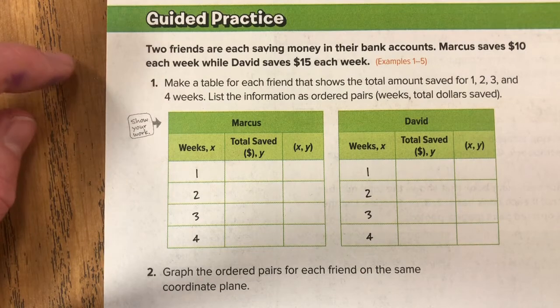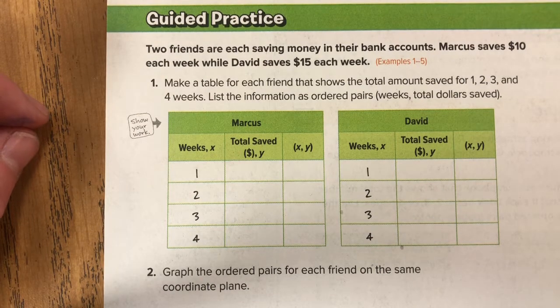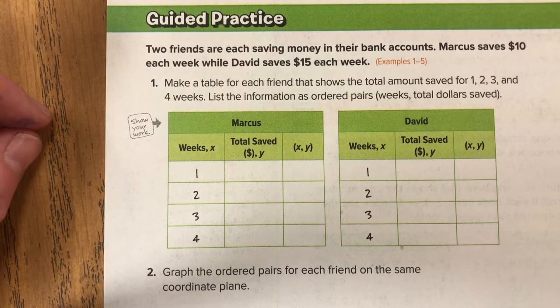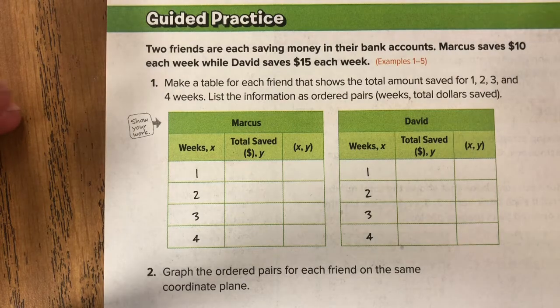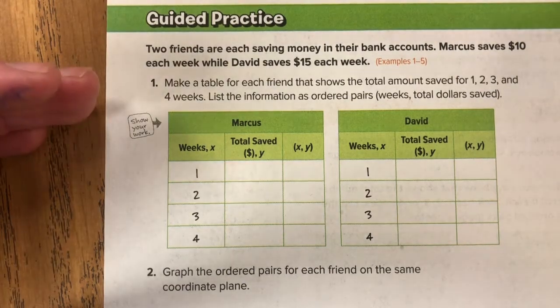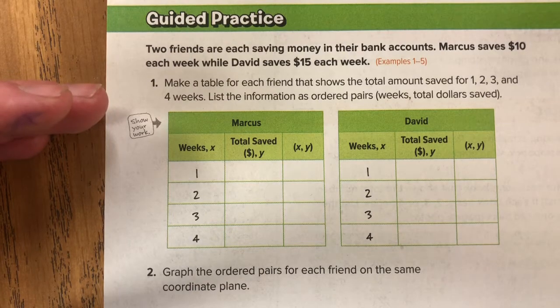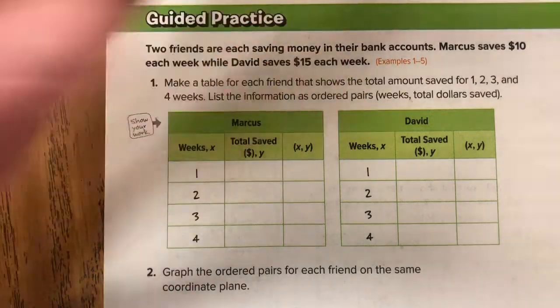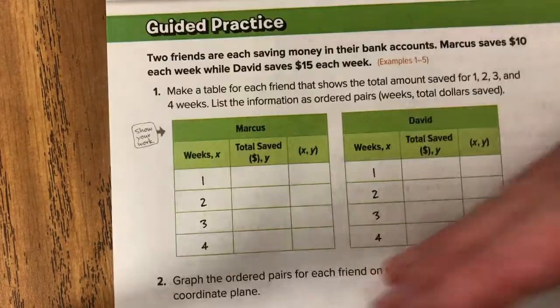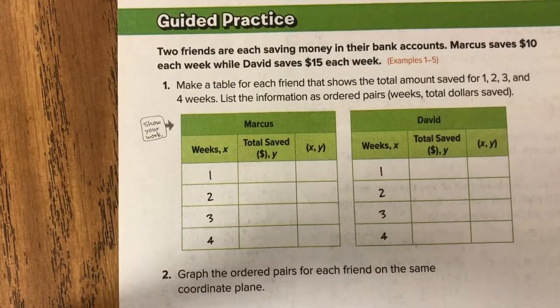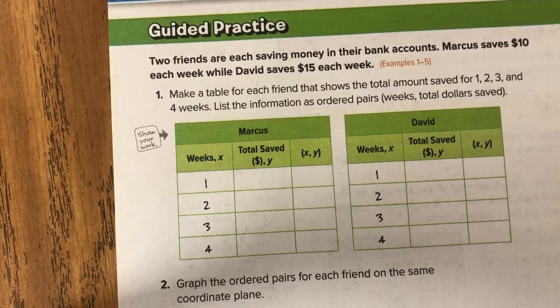Two friends are each saving money in their bank accounts. Marcus saves 10 bucks each week while David saves 15 each week. So right off the bat you can see that David is saving more money than Marcus. So just something to think about before we even get into this. Since David is saving more per week we should expect his line to be steeper than Marcus's because the amount of money he's saving is gonna grow at a lesser rate. So let's make sure our graph reflects that when we get there.